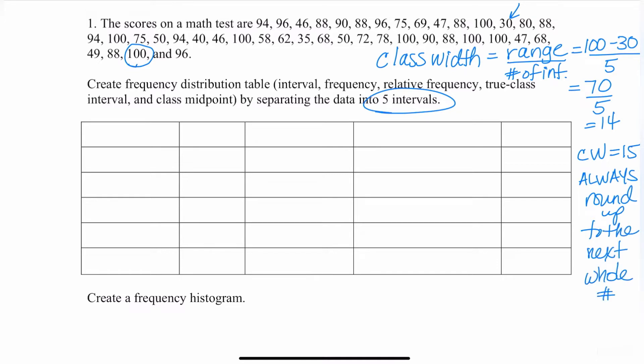Now that I've determined my class width is 15, I'm going to start by writing my intervals. I'm going to label this frequency distribution table with interval, frequency, relative frequency, true class interval, and class midpoint.